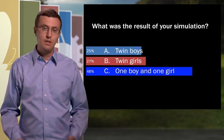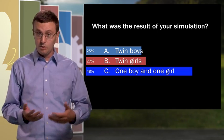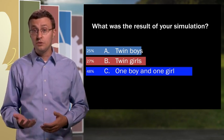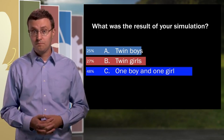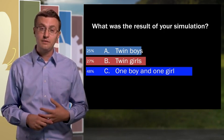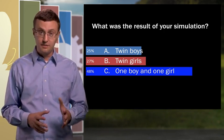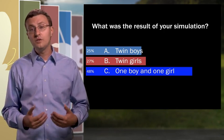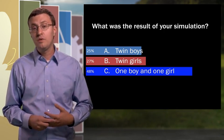You can think of the problem this way. There's a twin one, who is either a boy or a girl, and then there's a twin two, also either a boy or a girl. Let's assume, since this is a math class and we often make simplifying assumptions, that we are only considering two sexes, male and female, and that each of them occurs in the population with equal probability.